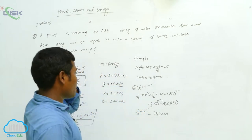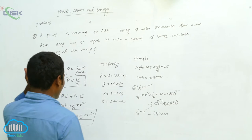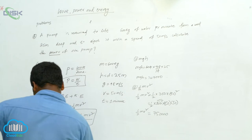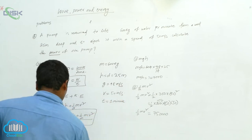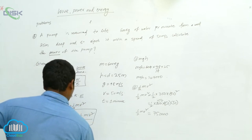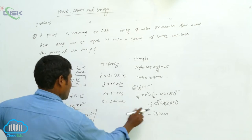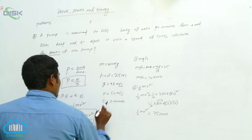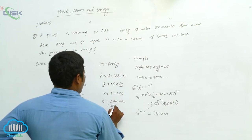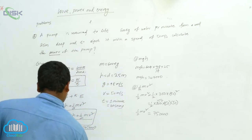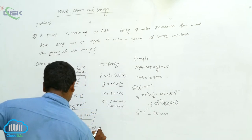Once you have the mgh value and the half mv squared value, substitute both into the formula. Then divide by t. Time is given as 1 minute, which we convert to 60 seconds, and then we can calculate the power.